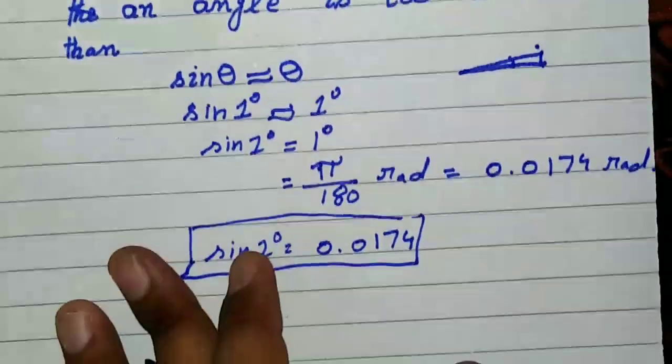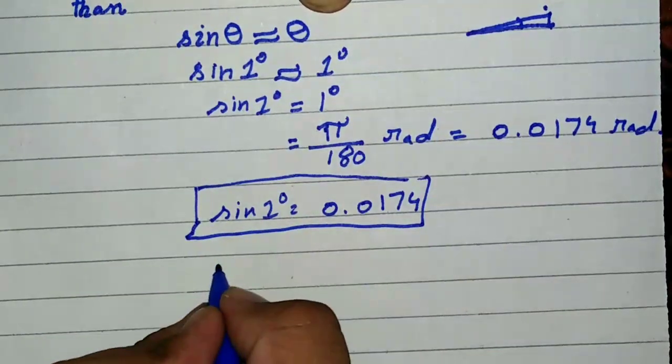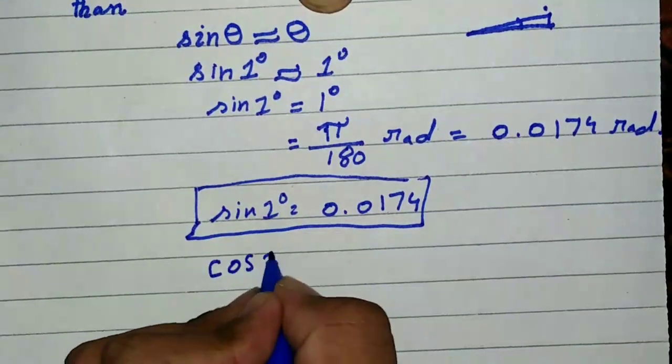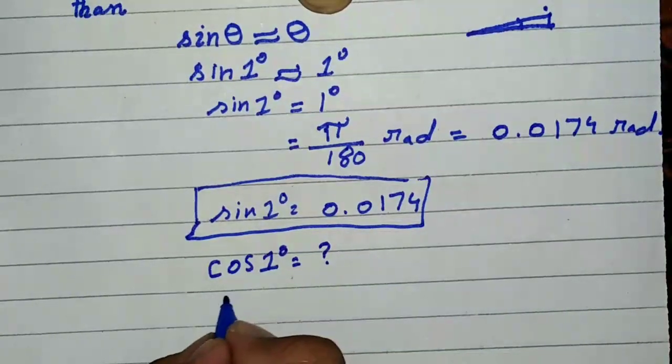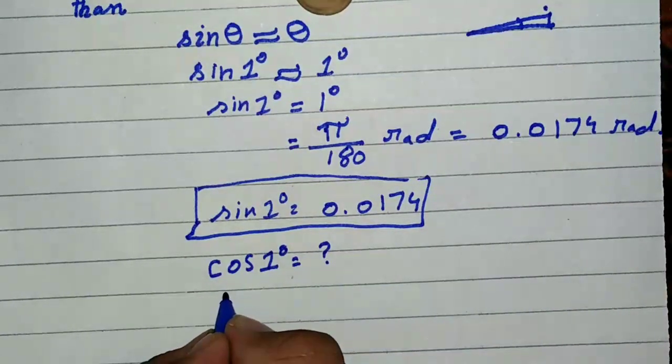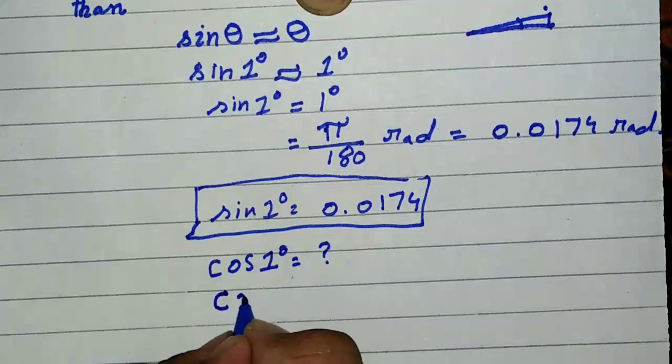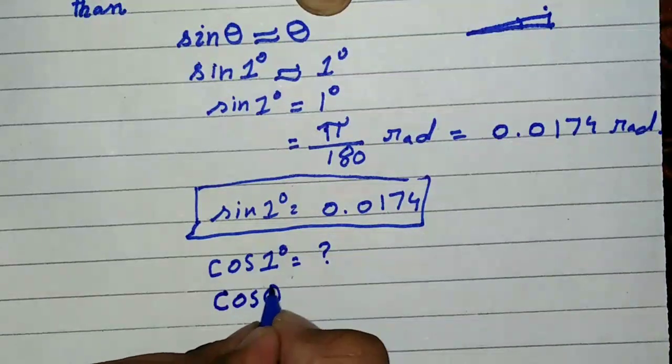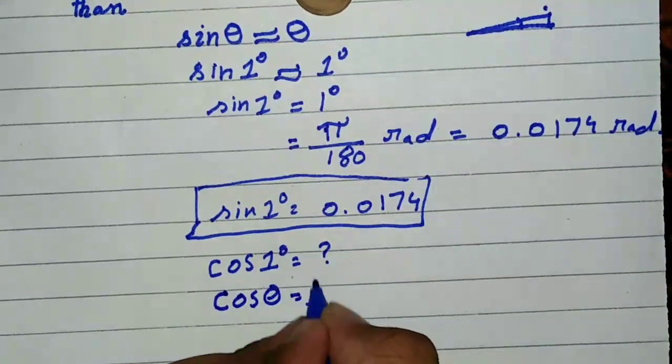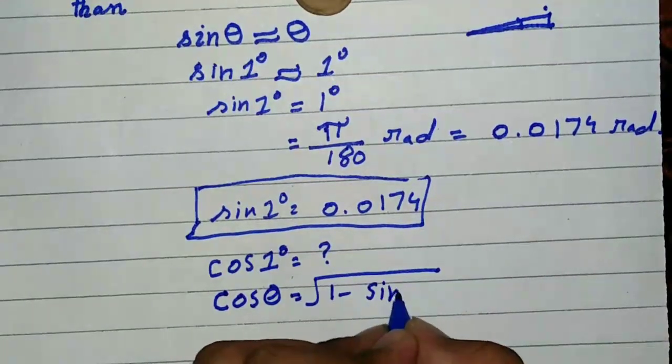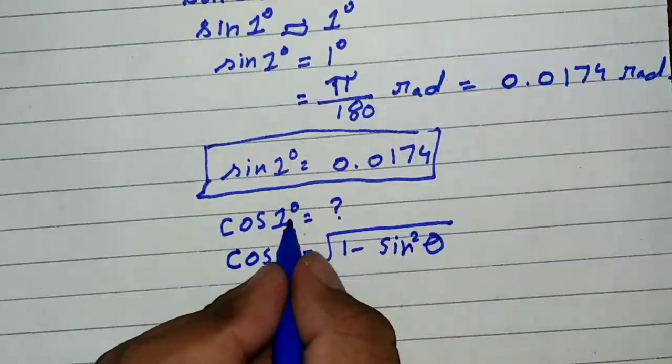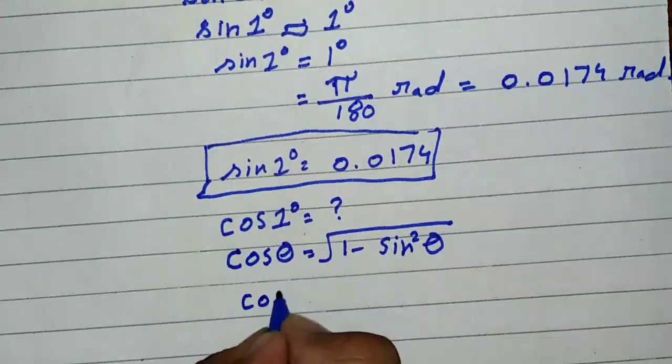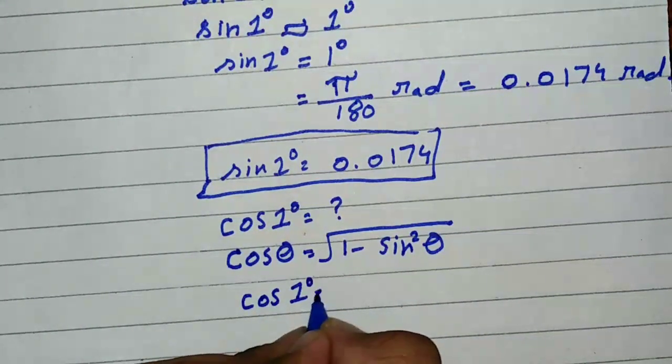How can we find the value of cos one degree? By using the trigonometric identities, the fundamental trigonometric identity, which is cos theta equals square root of one minus sine square theta. We want to find the value when theta is one degree, which equals square root of one minus sine squared one.